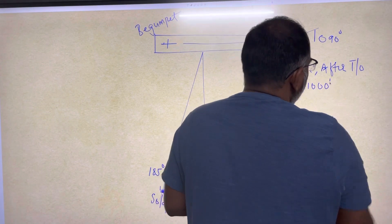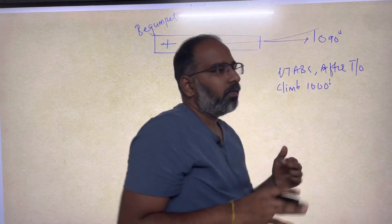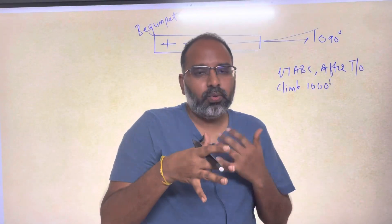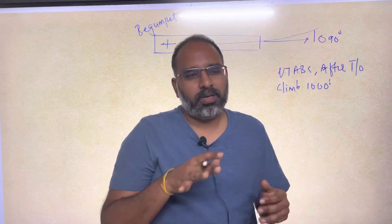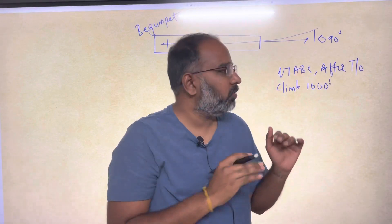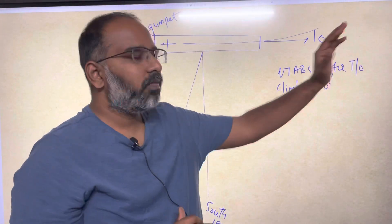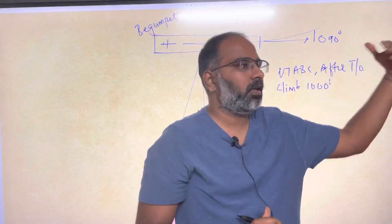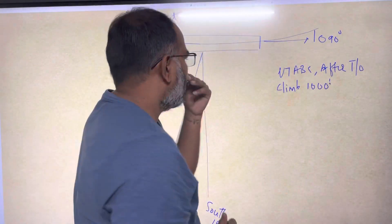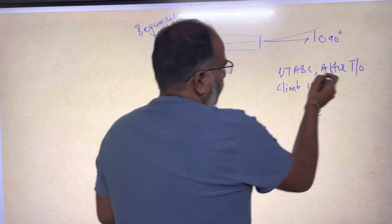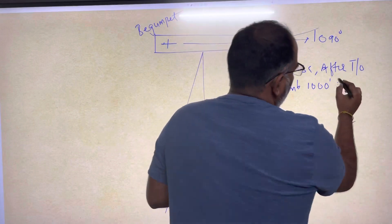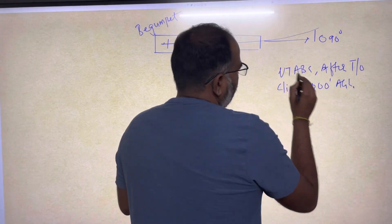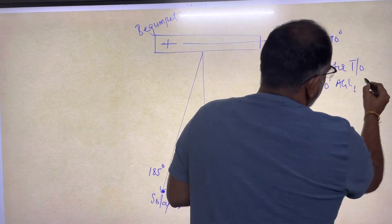1000 feet — you cannot turn your aircraft close to the ground because when you turn the aircraft you generally lose lift and have to add more power. It is dangerous to turn, so initially at least 400 feet you always climb the aircraft. So the departure clearance says climb 1000 feet AGL, and then turn right.